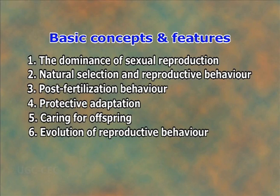Although it is easier mechanically for an organism simply to divide into two or more individuals, even many of the organisms that do exactly this — and they are not all so-called primitive forms — every so often intersperse the normal asexual pattern with sexual reproduction. Now, let us discuss the basic concepts and features involved in the reproductive behavioral pattern.